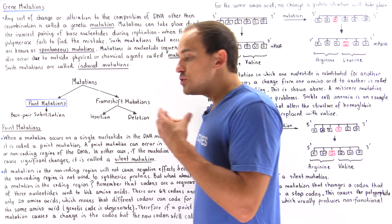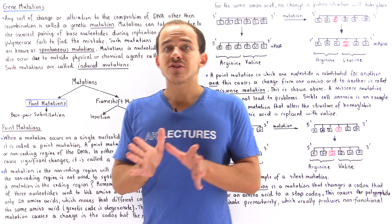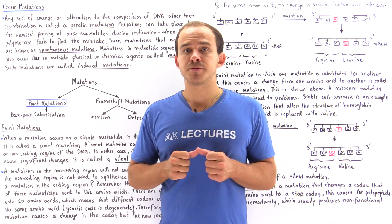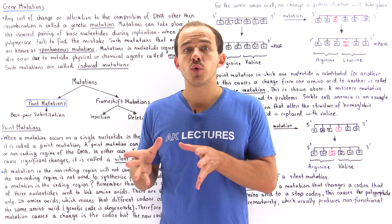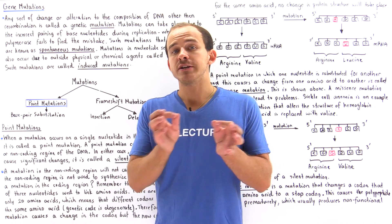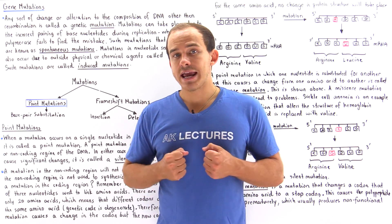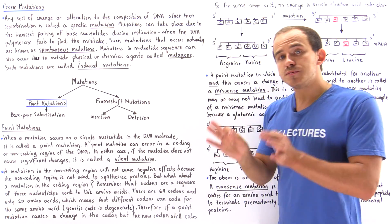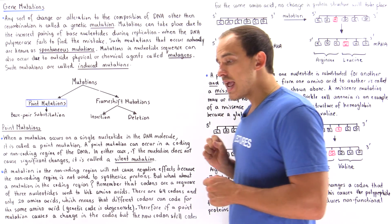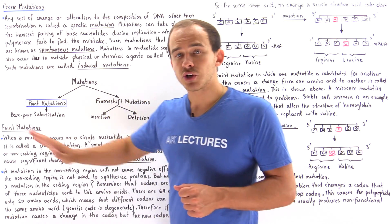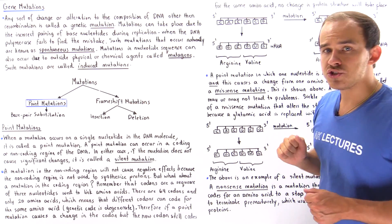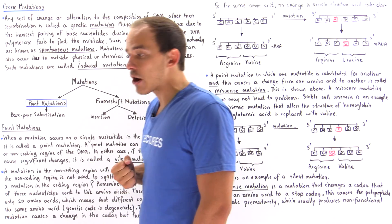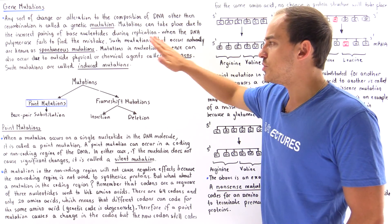If a mutation arises as a result of natural processes inside our body — such as a mistake during DNA replication in which DNA polymerase does not fix the mistake — such a mutation is known as a spontaneous mutation. On the other hand, mutations that arise in DNA as a result of some outside physical or chemical agent, such as a mutagen, are known as induced mutations.